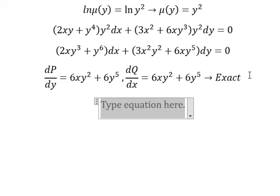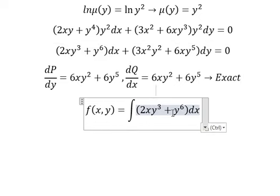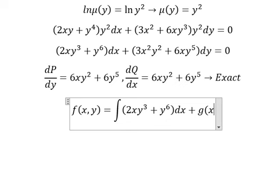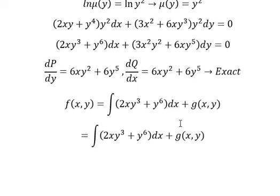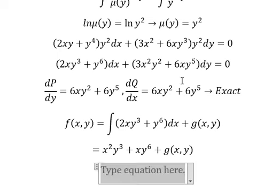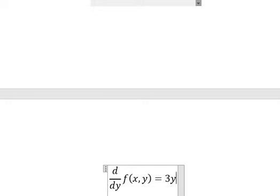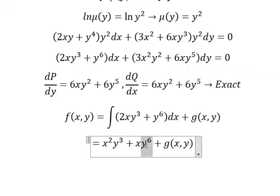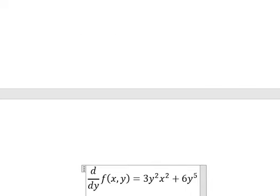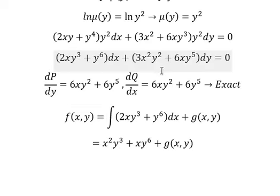Now we need to put f(x, y) equals to the integration of this one. And we have 3x y. The integration of 2x gives x squared y to the power of 3, and this one gives x. Next, we need to do first the derivative of f with respect to y. This one gives 3y to the power of 2, and this one gives 6x y to the power of 5. We need the derivative of g(y) to the power of 5. We know that this one equals to this one. Now we simplify both sides and get number 0.